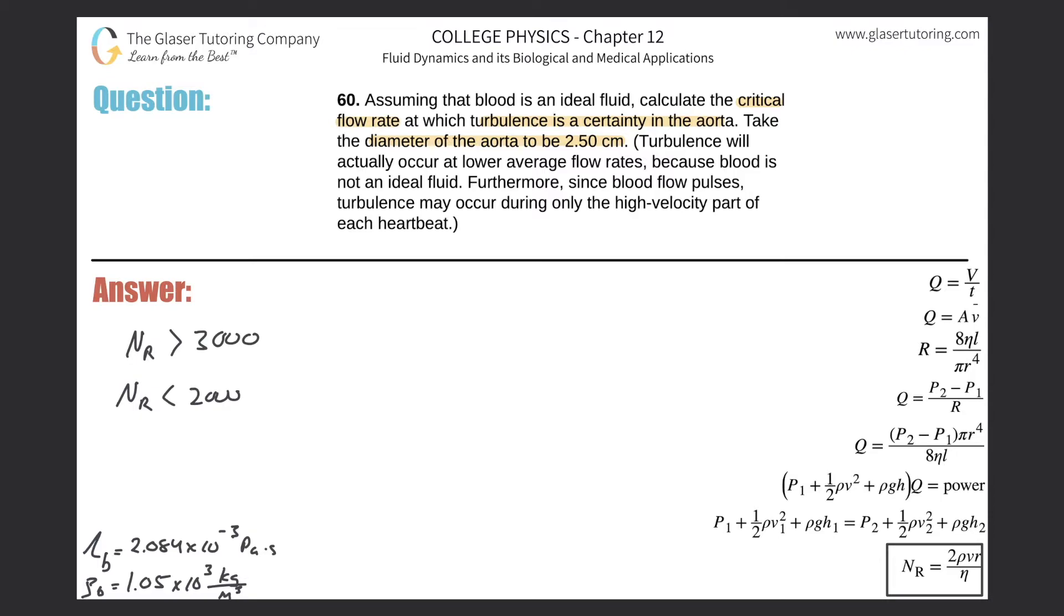I'm going to use the Reynolds number formula, which says that NR equals 2 multiplied by the density of the fluid, multiplied by the velocity, multiplied by the radius of the tube, divided by the viscosity of the fluid.